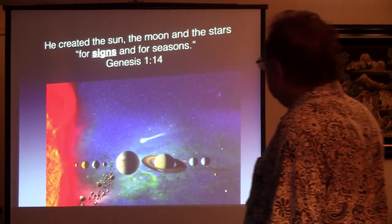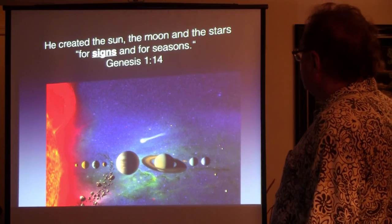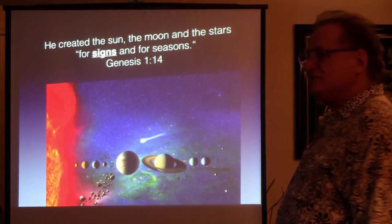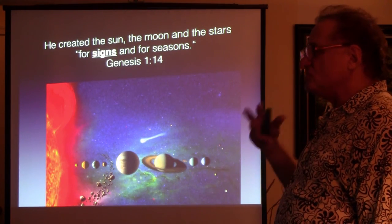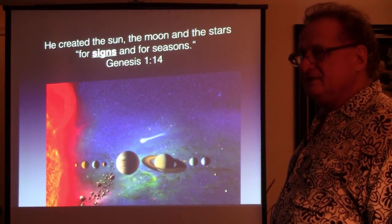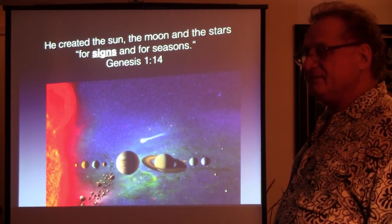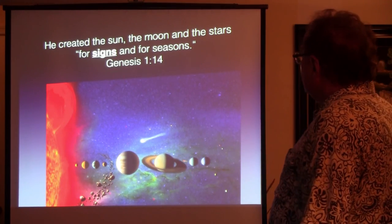He created the sun, the moon, and the stars for signs and for seasons. That's in the first chapter of Genesis. It didn't just say for seasons, but for signs and for seasons. What's signs mean? Signs means exactly what it says. It's a signal or a message to you.